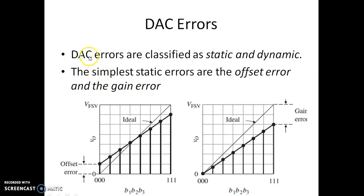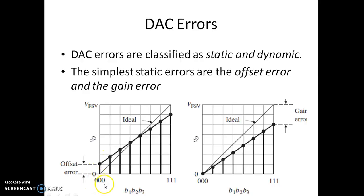DAC errors are classified into two types: static and dynamic errors. The simplest static errors are offset error and gain error. Looking at a 3-bit DAC example, the ideal expected output is a straight line from 0 to VFSR, but the actual output values may deviate. When the input is 0 and we still get some output voltage, we call this an offset error, which is a static error.